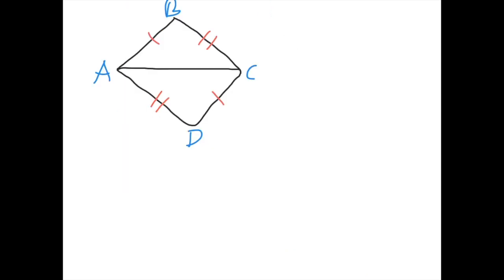Alright, now we have two triangles — and yes they are triangles, I'm sorry I can't draw. We have two triangles, and I'm telling you that they're congruent. We'll find very soon that just with that picture you can actually tell that they're congruent, but that's in the future. For now, I'm telling you those two triangles are congruent.